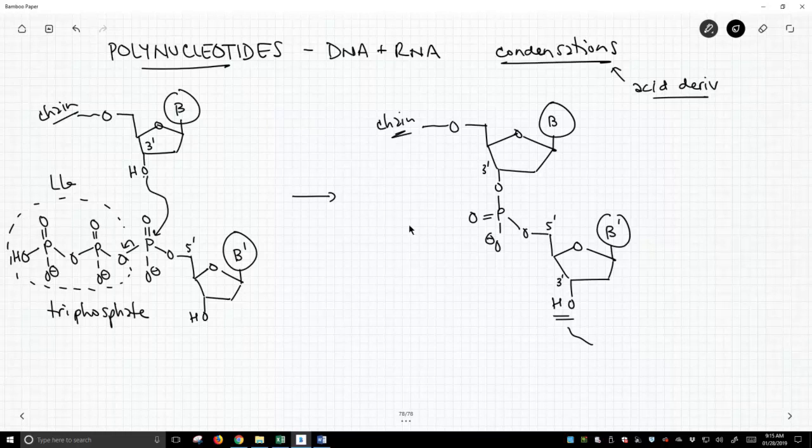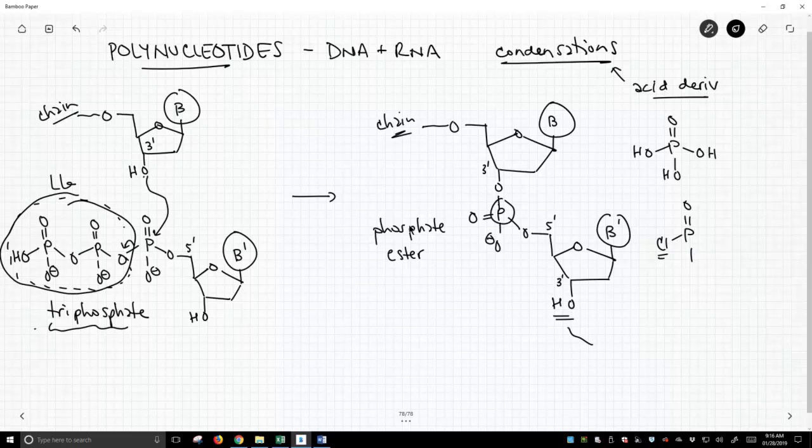it does involve an acid derivative. It's just not a carboxylic acid derivative. It's an acid derivative of phosphoric acid. So this phosphorus in here, this is now a phosphate ester. And we made that ester from some kind of crazy form of a triphosphate. But actually, this basically,